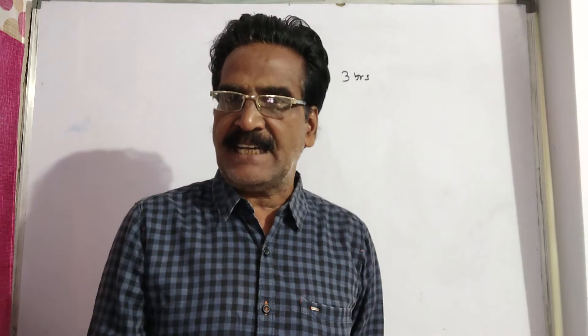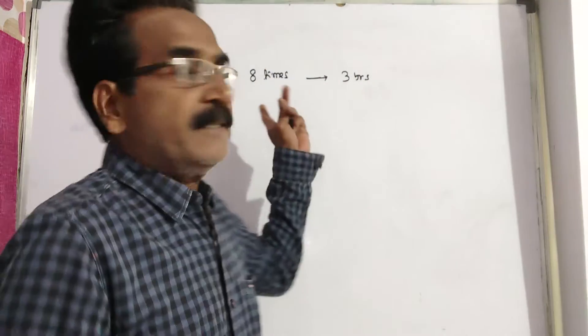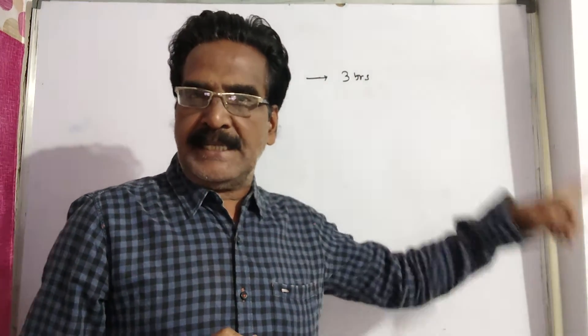See, a sum of money becomes 8 times itself in 3 years. The question is, in how many years does it become 32 times itself? See friends, 8 times in 3 years.